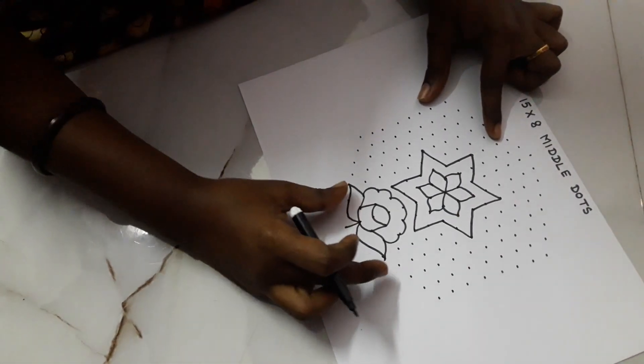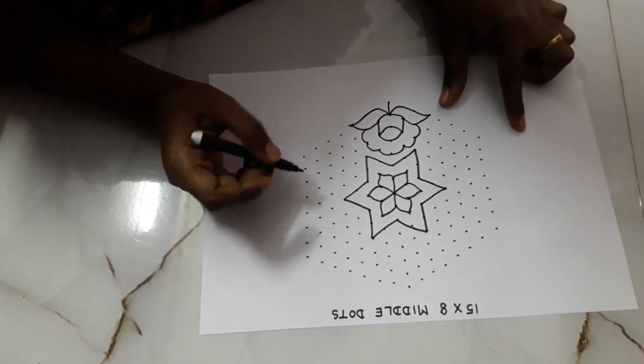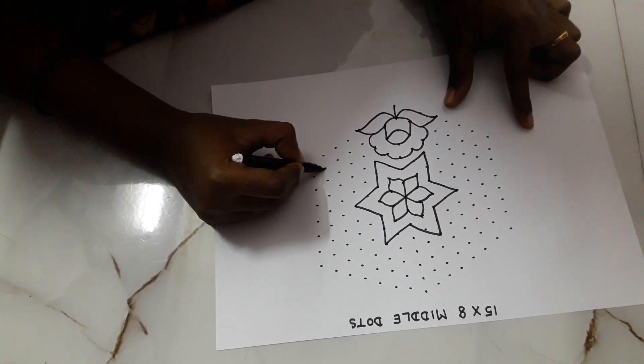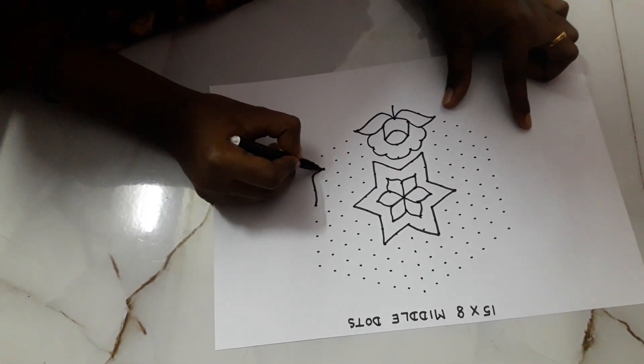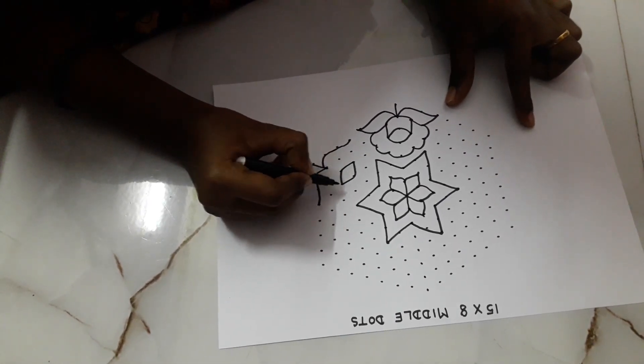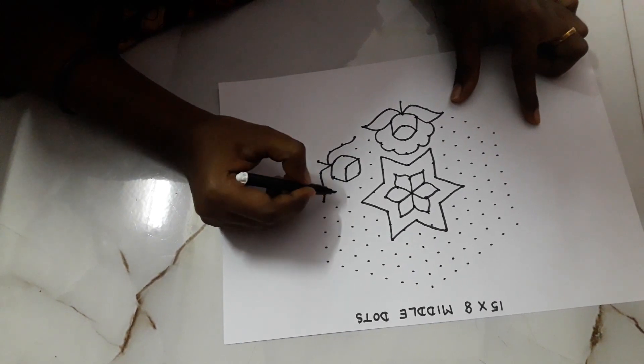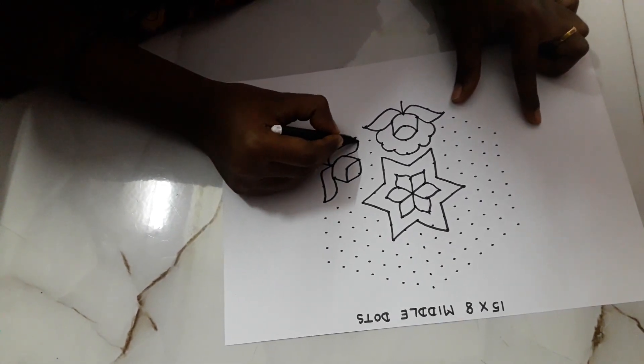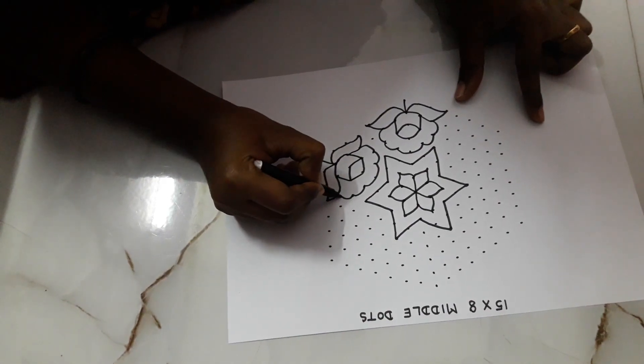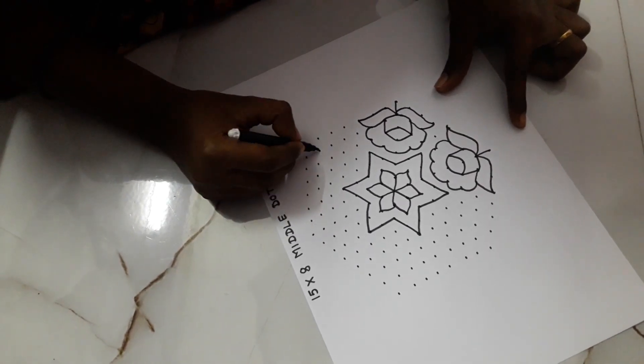See? Now, it's like a rose. One more rose I will draw and show you how we have to draw. Here you have to draw like this. Then put your leaf. It's an easy one if you practice you will draw easily.